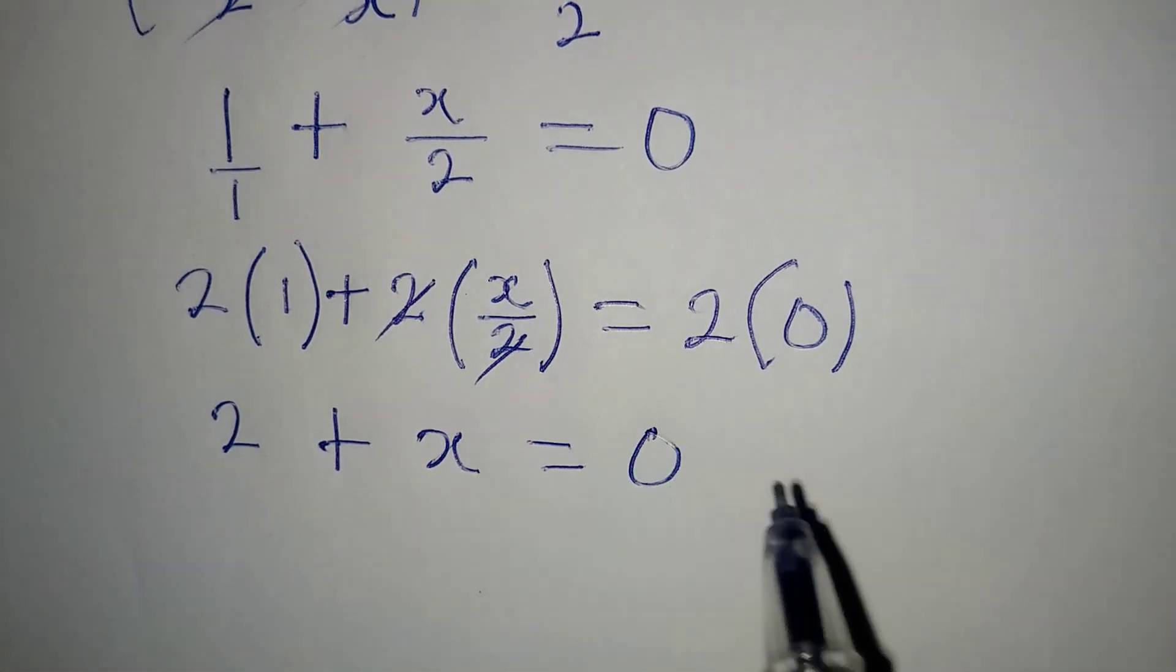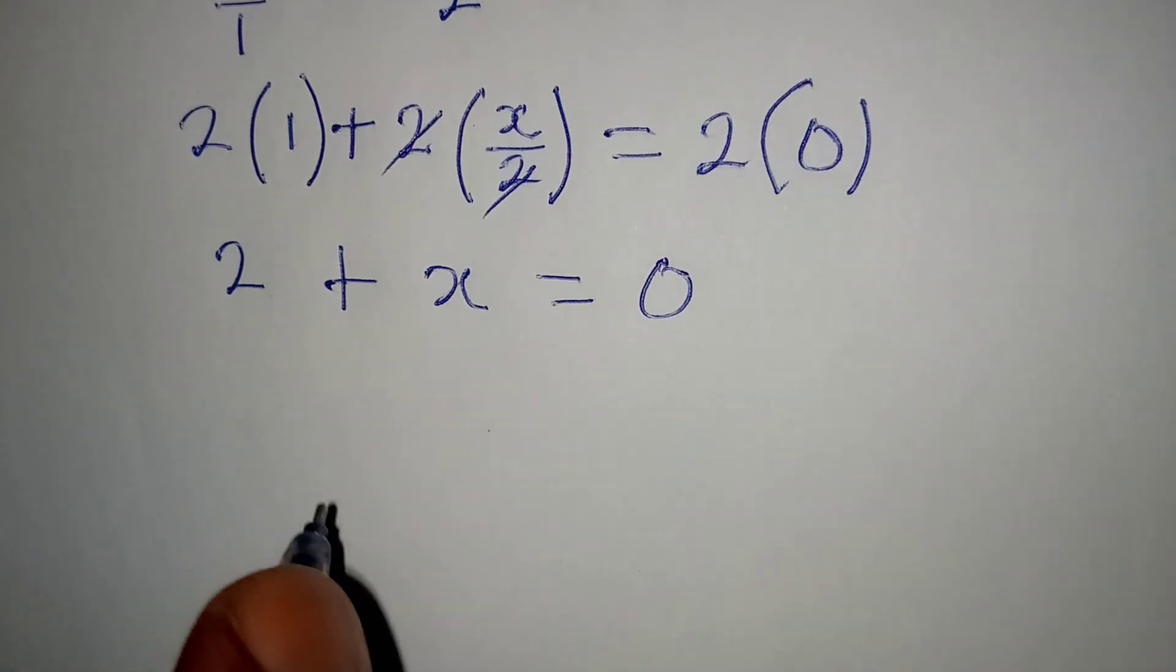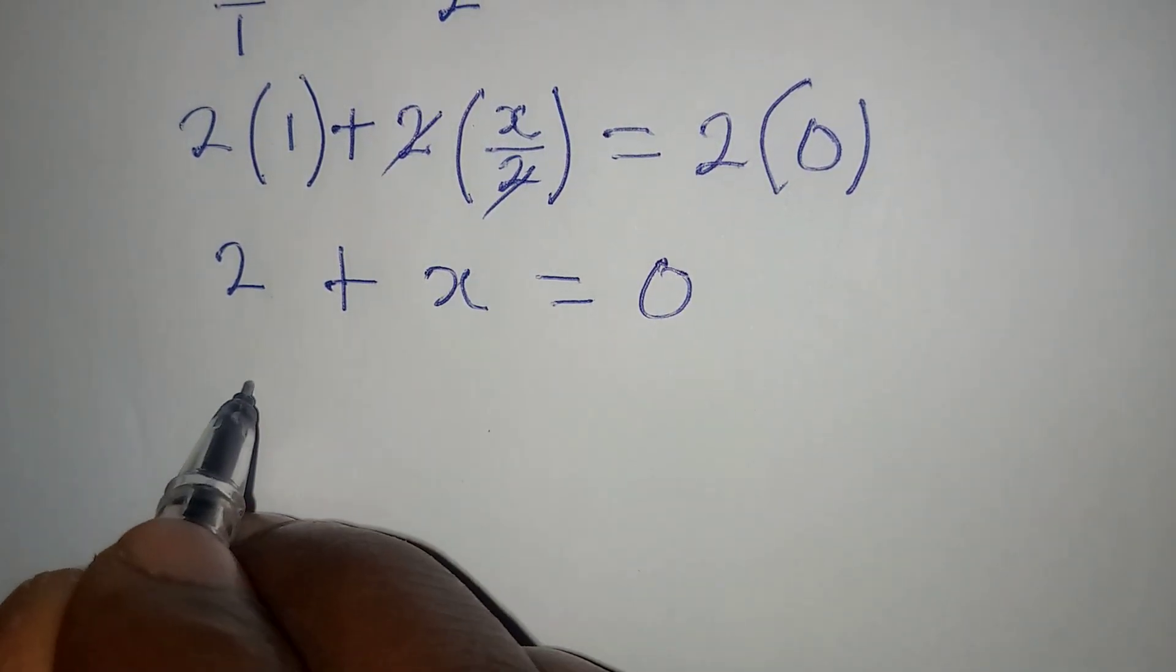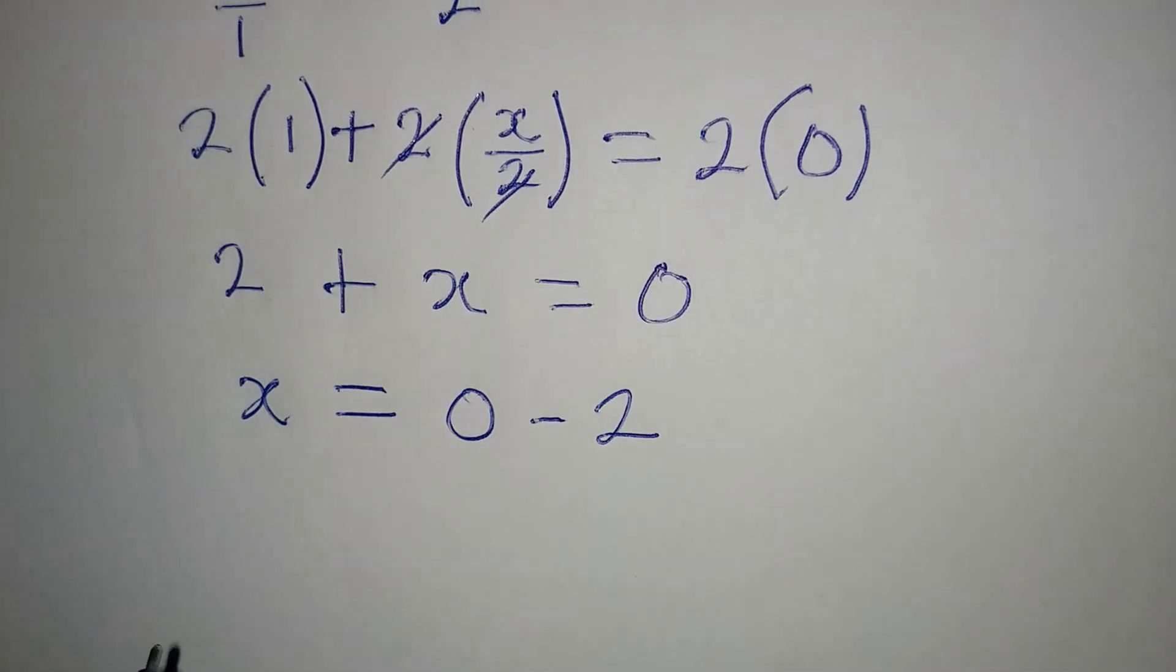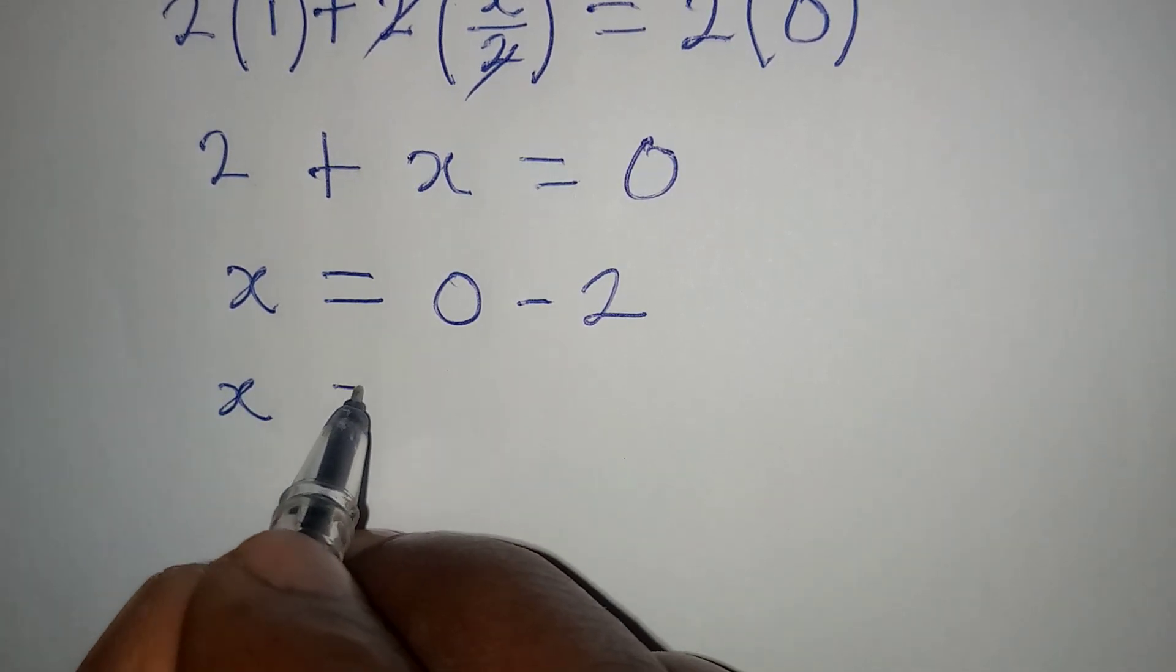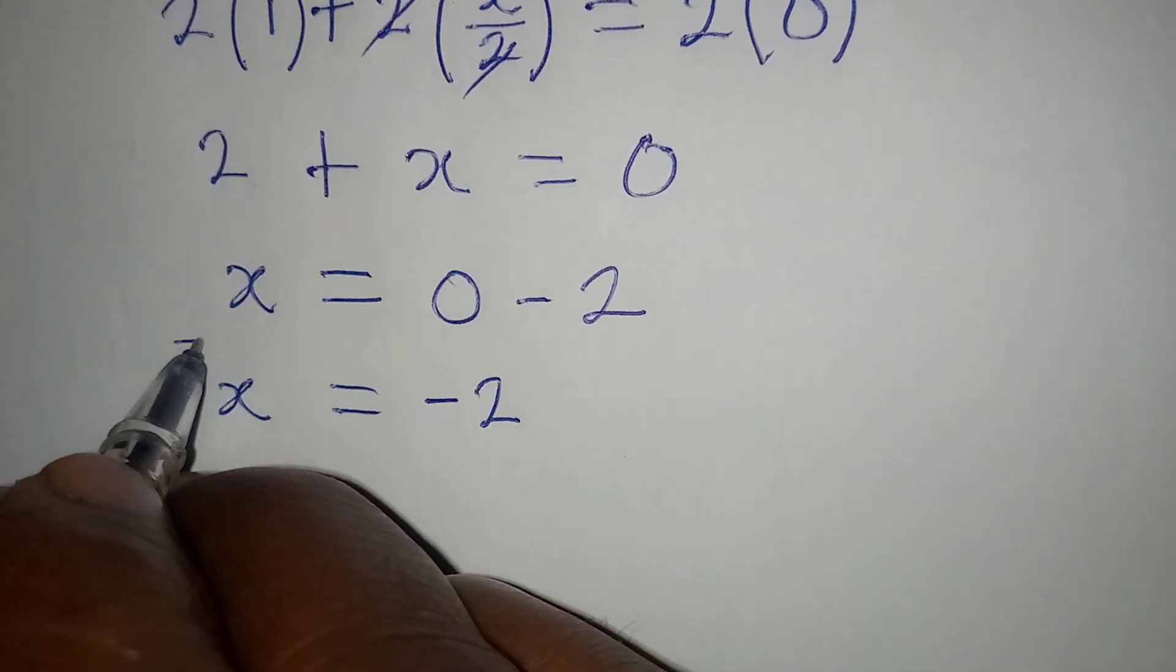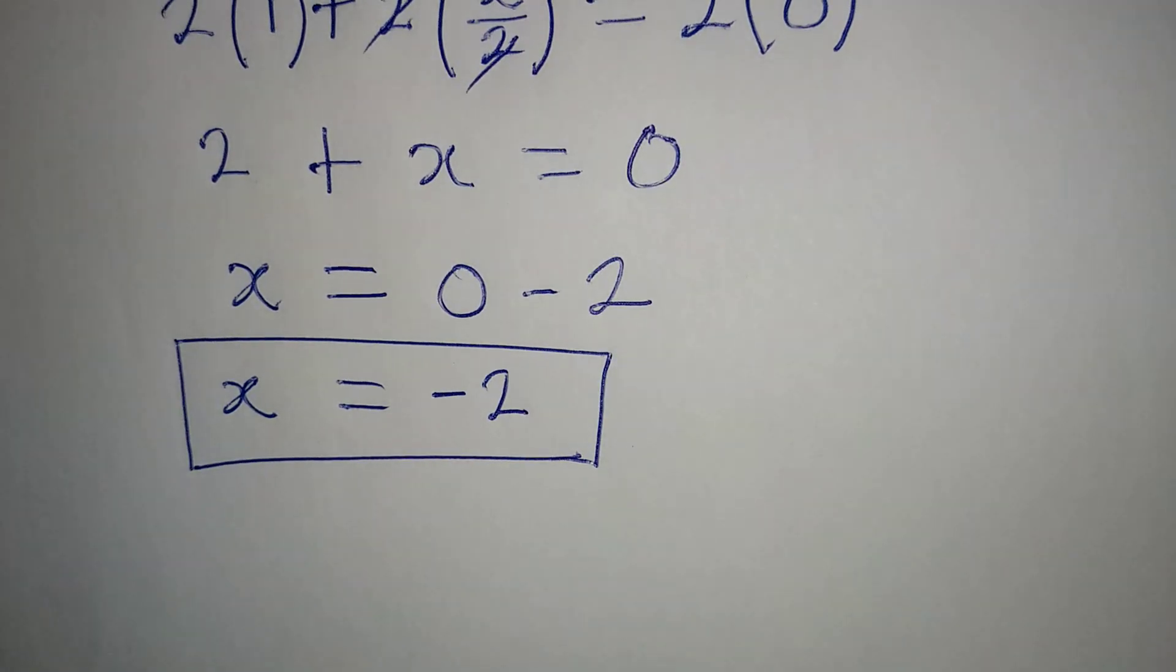From here we can make x the subject, so we have x to be equal to 0 minus 2. This is to confirm that x is equal to minus 2. So this is the value of x from the equation.